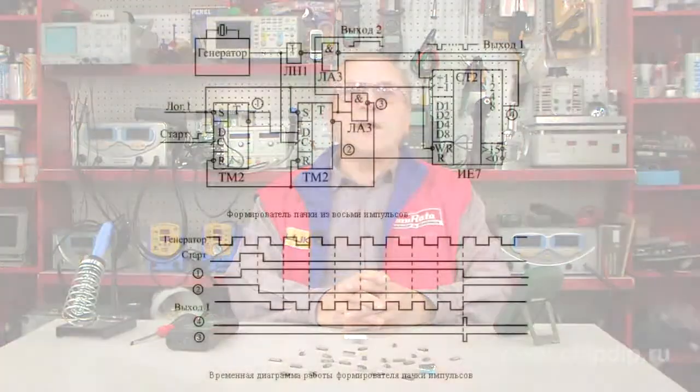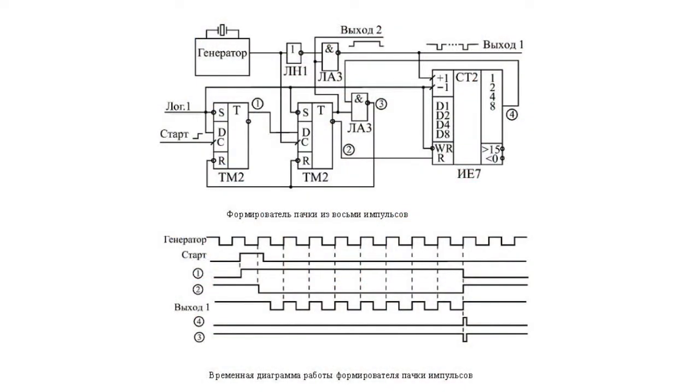A common task is to form a packet of input impulses with a set number of impulses. For example, it is necessary in order to organize information exchange in a serial code. This type of impulse packet form can be built with the help of synchronous counters with asynchronous carry.